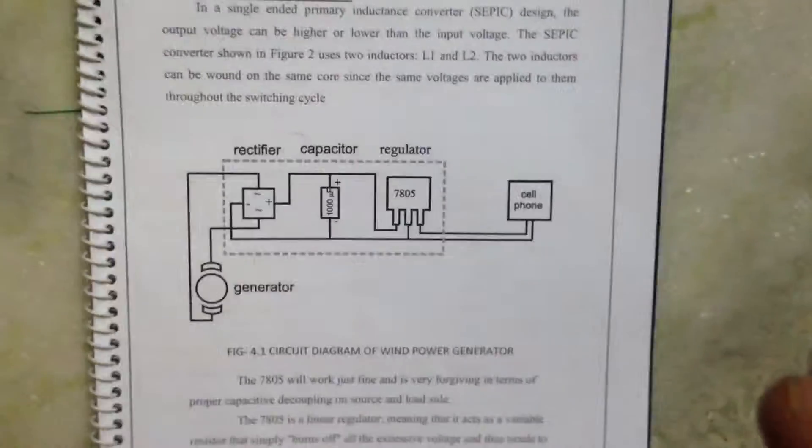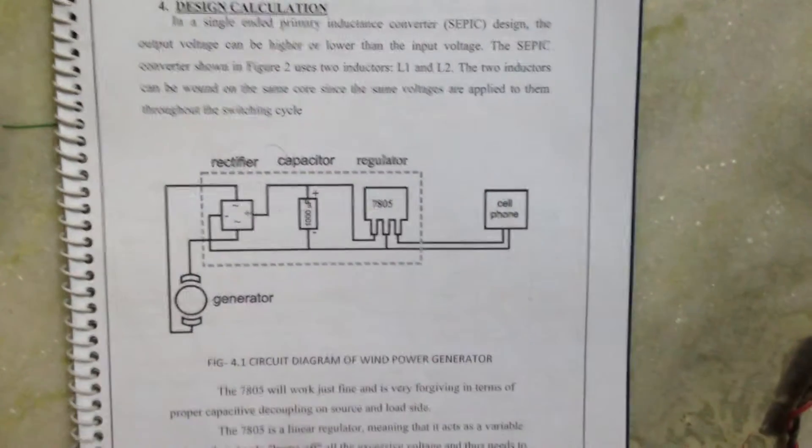This is the circuit diagram. Generator, Rectifier, Capacitor, Regulator, Cell Phone.